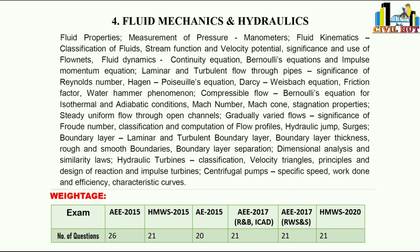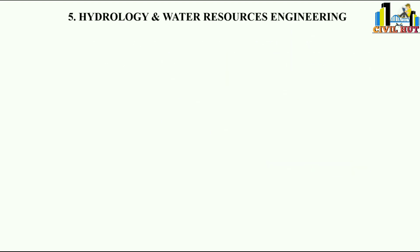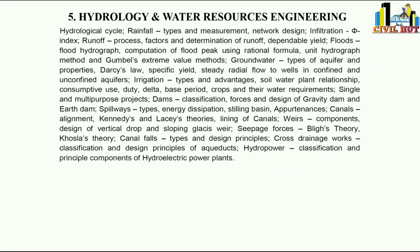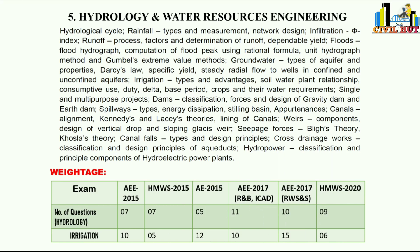Next is Hydrology and Water Resources Engineering (Irrigation Engineering). Topics include rain gauges, infiltration, runoff, evapotranspiration, flood hydrographs, and so on. Historical counts: 7, 7, 5, 11, 10, 9 — approximately 8–10 questions for hydrology alone. Combined, Hydrology and Irrigation give 15–20 questions. These are easily scored subjects and very important for AEE.